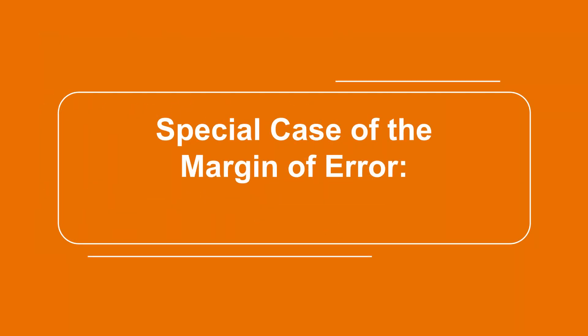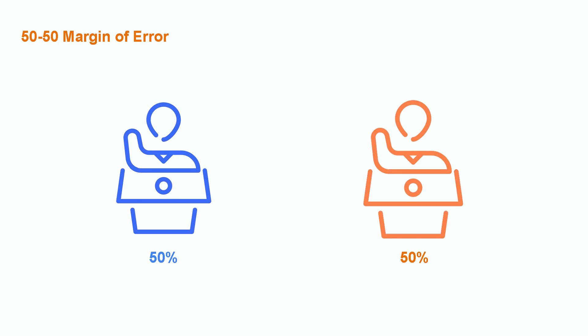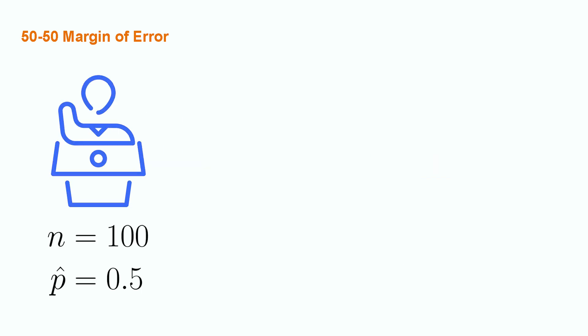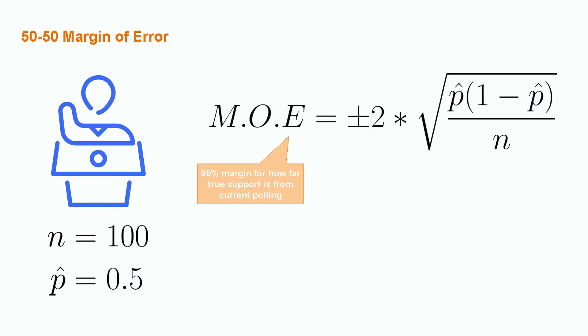There is, however, one additional special case for the margin of error formula that makes the calculation even simpler, the 50-50 split. Let's say that we poll 100 voters and they leave us with a perfect 50-50 split between our candidates. Let's work this problem from the perspective of the blue candidate, in which case we say that we have n equals 100 and a sample proportion of 0.5. From here, our margin of error is given by our previously derived equation.